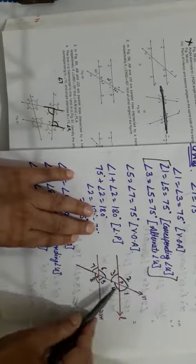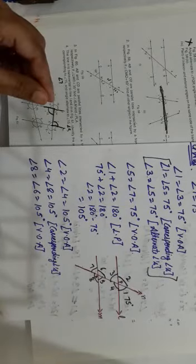In sum number 6, we have a figure where L and M are parallel lines, N is a transversal intersecting both at points P and Q, forming 8 angles. Angle 1 is 75 degrees. When one angle is known, you can find others using corresponding angles definition, vertically opposite angles definition, alternate angles definition, and the linear pair concept.